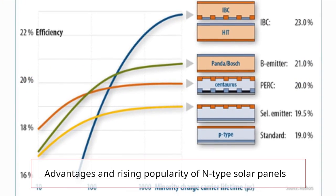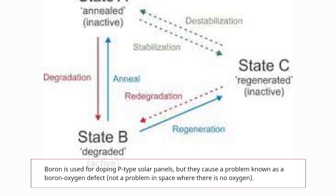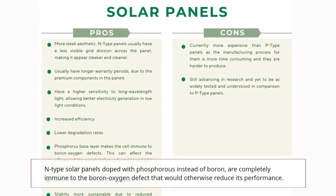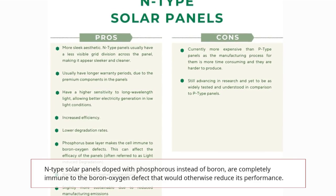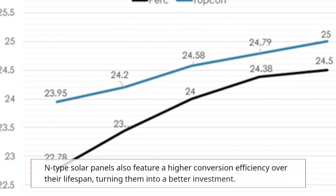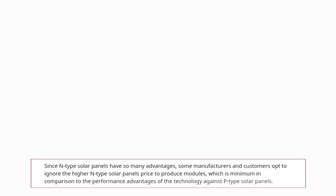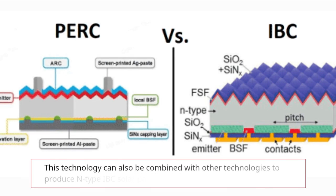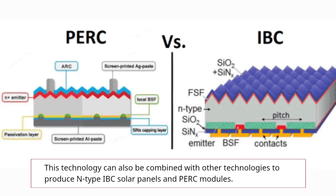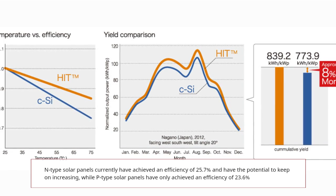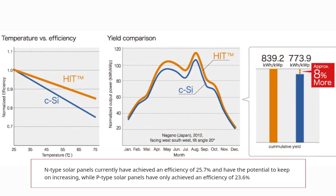Advantages and rising popularity of N-type solar panels: Boron is used for doping P-type solar panels, but it causes a problem known as the boron-oxygen defect — not a problem in space where there is no oxygen. N-type solar panels doped with phosphorus instead of boron are completely immune to the boron-oxygen defect that would otherwise reduce performance. N-type solar panels also feature a higher conversion efficiency over their lifespan, making them a better investment. Some manufacturers and customers opt to accept the higher N-type solar panel price, which is minimal compared to the performance advantages. This technology can also be combined with IBC and PERC to produce N-type IBC solar panels and PERC modules. N-type solar panels have currently achieved an efficiency of 25.7%, while P-type solar panels have only achieved 23.6%.